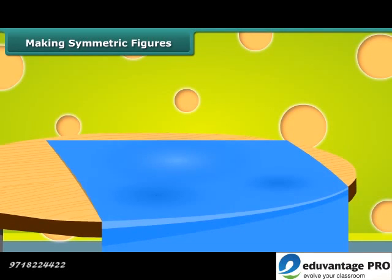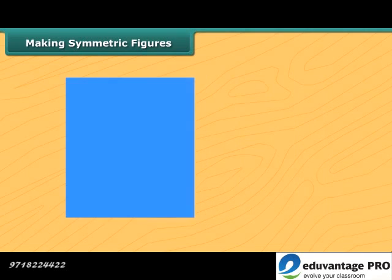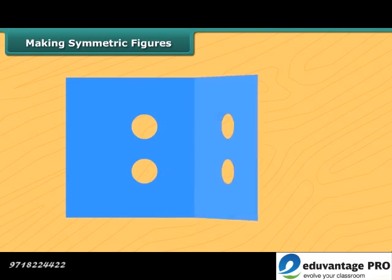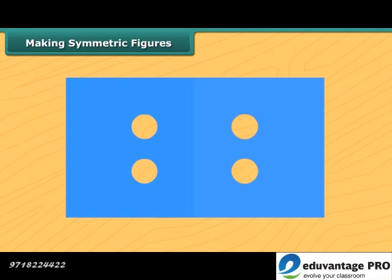Take a piece of cloth, fold it into halves. Now cut two small circles from the middle of this piece. Now after unfolding you can see a symmetric pattern that has a line of symmetry along which it can be cut to two identical parts.